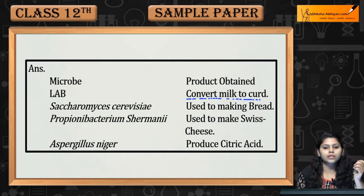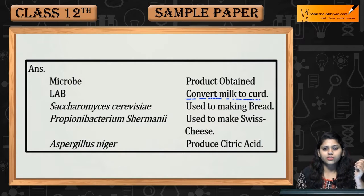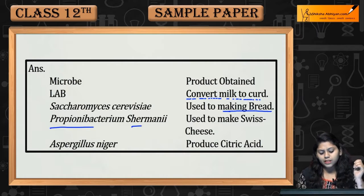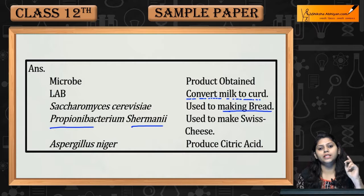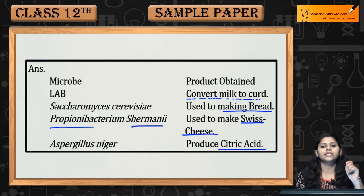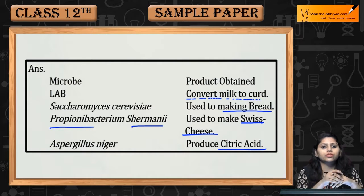Lactobacillus converts milk to curd. Saccharomyces cerevisiae is used to make bread. Propionibacterium sharmanii is used to make Swiss cheese. Aspergillus niger produces citric acid. This was the question.